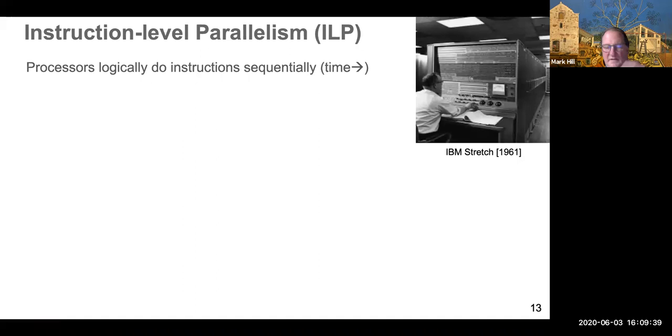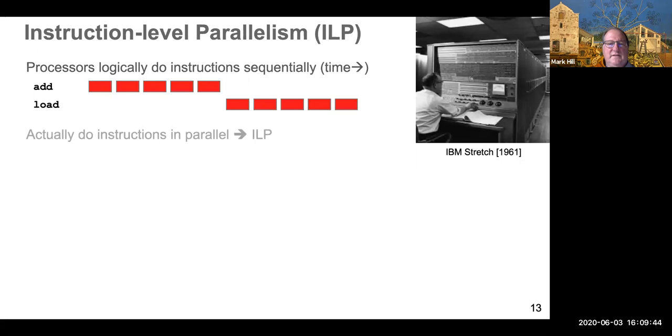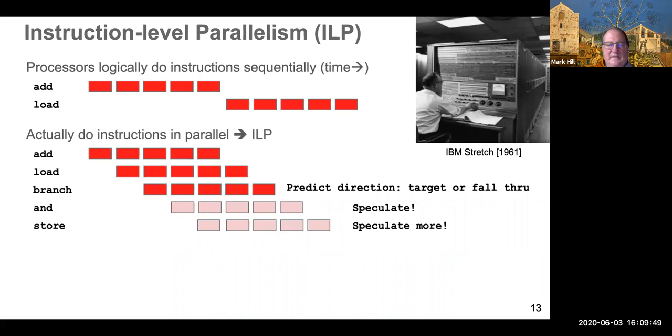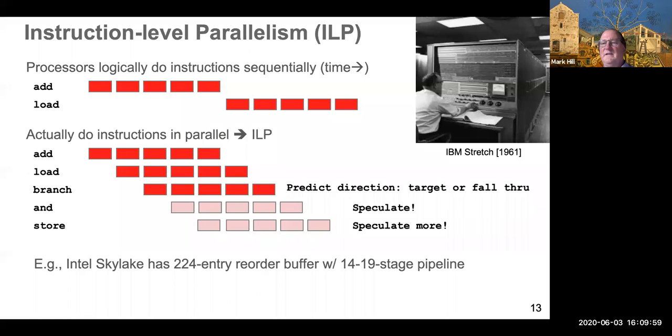Instruction-level parallelism, as you all know, is the idea that we logically do instructions sequentially one at a time, but we actually do them highly overlapped and with a lot of speculation, to the extent which Intel Skylake has a 224-entry reorder buffer and a 14 to 19-stage pipeline. By the way, the picture up there shows IBM Stretch from 1961, which was the first computer I know about that used instruction-level parallelism, and you can see that it stretches way back in the room, so it was decidedly not a microprocessor.